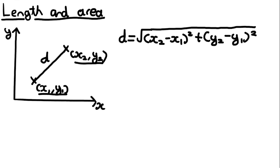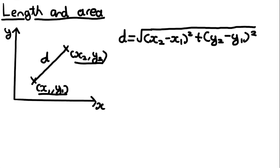Like the gradient formula, you can swap the 1s and the 2s around and you'll still get the same answer out, so it's not too important. The reason this equation exists is actually to do with Pythagoras — you don't really need to know about this, but that's kind of why it looks like this with the squares and square roots.